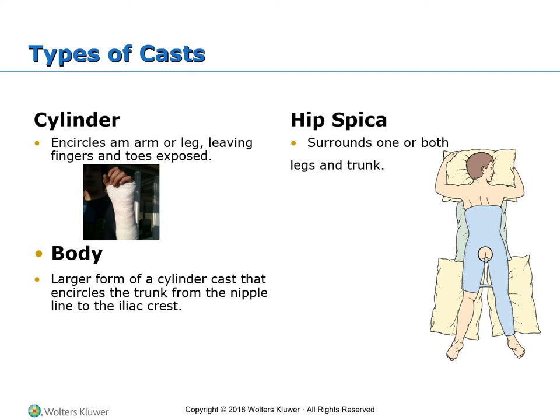A cast is a rigid mold that immobilizes an injured structure while it heals. There are basically three types of casts. A cylinder cast encircles an arm or leg, leaving the fingers or toes exposed. A body cast is a larger form of a cylinder cast that encircles the trunk from about the nipple line to the iliac crest. A hip spica cast surrounds one or both legs and the trunk. It may be strengthened by a bar that spans the casted area between the legs and is trimmed open in the anal and genital areas to facilitate elimination.